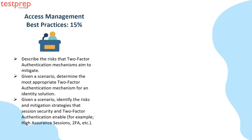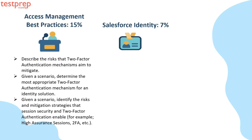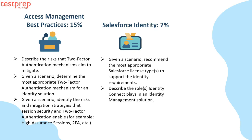Number four: Access Management Best Practices, 15%. It contains: first, describe the risks that two-factor authentication mechanisms aim to mitigate. Second, given a scenario, determine the most appropriate two-factor authentication mechanism for an identity solution. Third, given a scenario, identify the risks and mitigation strategies that session security and two-factor authentication enable — for example, high-assurance sessions, 2FA, etc.